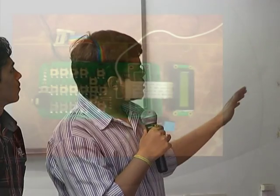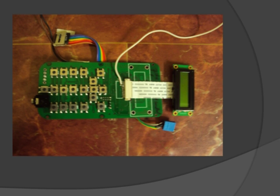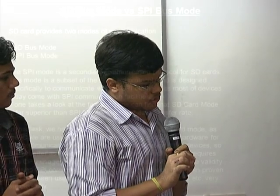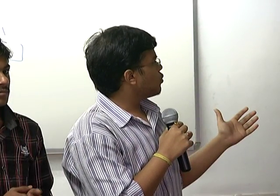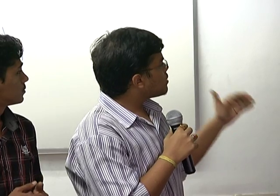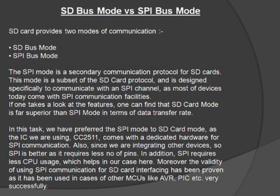This is the module given to us for testing our code. It contains an LCD screen — a 16×2 display where we can test outputs — and the SD card is connected above it. The SD card provides two ways of communicating: SD bus mode and SPI bus mode. SD bus mode is faster and more advantageous, but we chose SPI bus mode because it puts less load on our processor, uses fewer pins, and SPI-based SD card interfacing is well-proven and widely used.